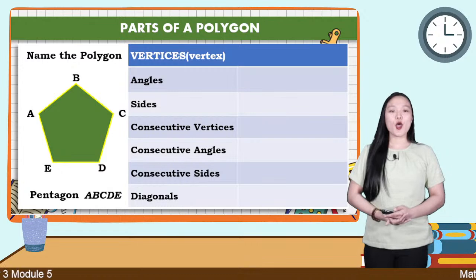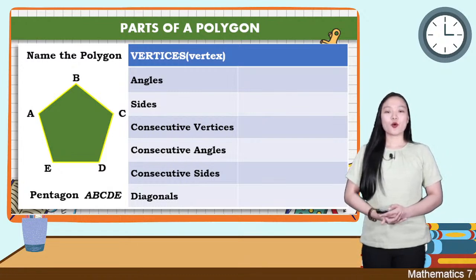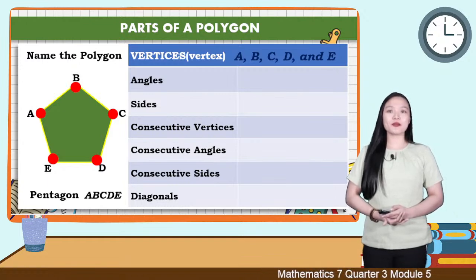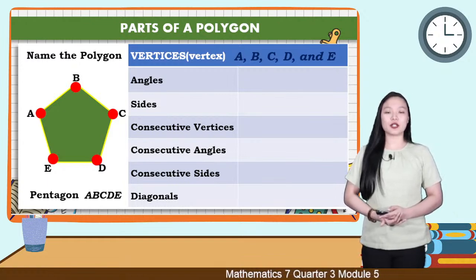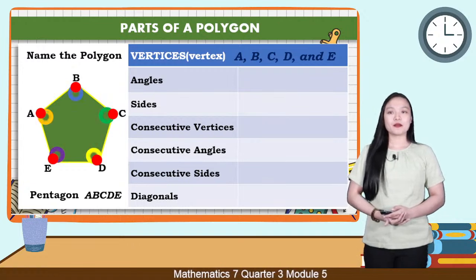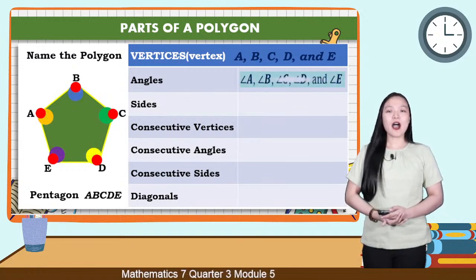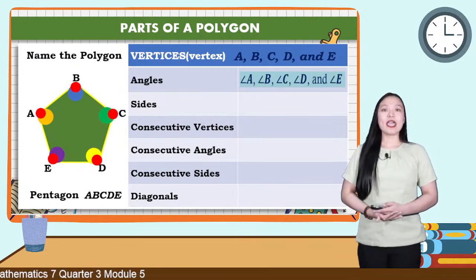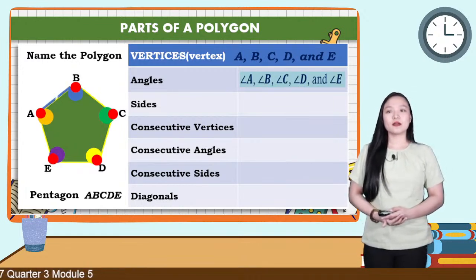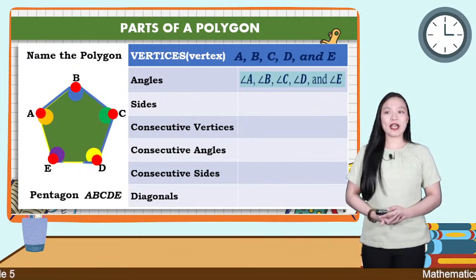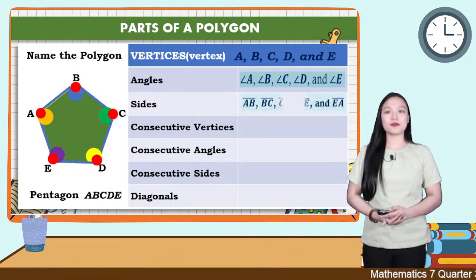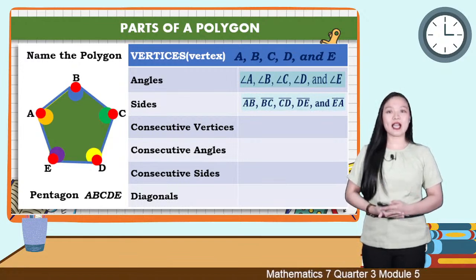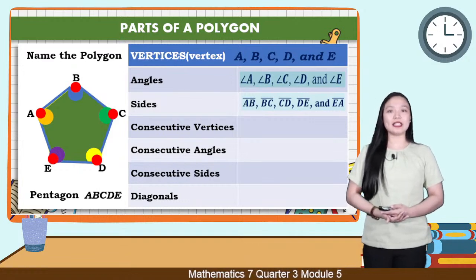We have vertices: vertex A, vertex B, vertex C, vertex D, and vertex E. We also have angle A, angle B, angle C, angle D, and angle E. We also have the sides: side AB, side BC, side CD, side DE, and side EA.